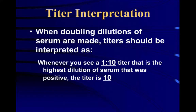Interpreting a titer: when using the doubling dilutions of serum in the gold standard, whenever you see a 1-to-10 dilution, that titer is really 10. Whenever you see a 1-to-anything, that's the dilution of serum — the last dilution of serum that gave you a positive result. Just as we were looking at that hemagglutination inhibition, if you went out to a dilution of 1-to-10 and it was still inhibited, the next dilution would be 20 and that was not inhibited — so that was, in fact, a titer of 10.